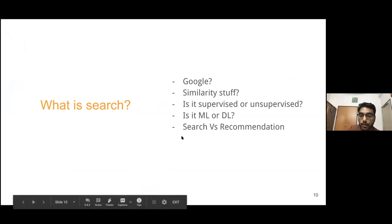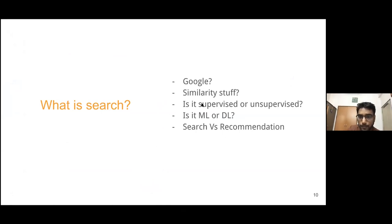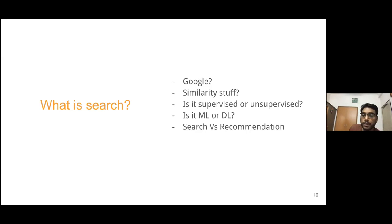As a data scientist, questions come up: is search just similarity? Is it unsupervised or supervised? Is it just machine learning or deep learning? And what is the relation between search and recommendation? They are very similar. The only difference is that in search we provide a query in written form, while in recommendation we find something related to a given item - that item's features become the query for search, and the similar things found become the recommendations.